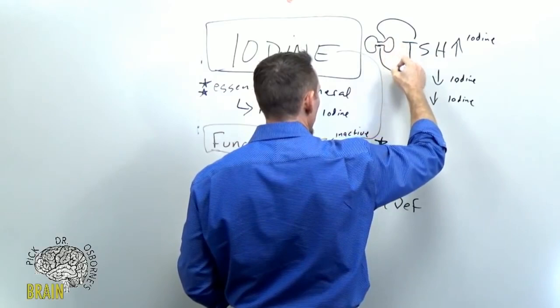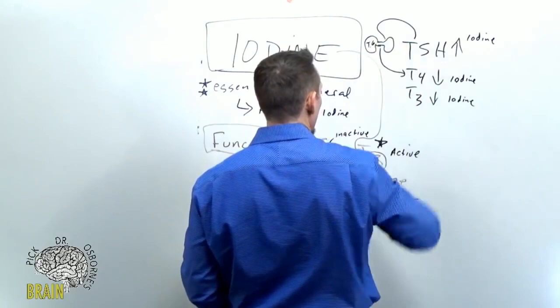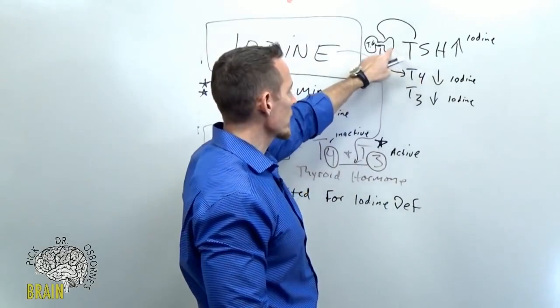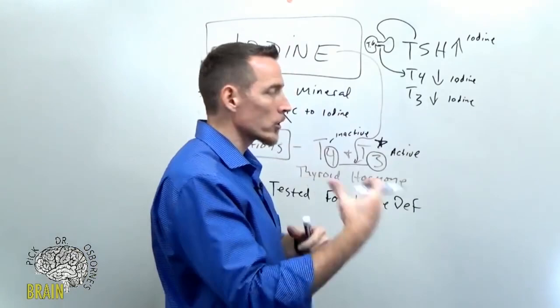So here's your thyroid gland here. TSH stimulates the thyroid gland to produce T4. And in doing that, what it actually does is it tells the thyroid gland to trap more iodine from the diet. So from the food that you're eating, the thyroid gland itself will start trapping iodine to produce that T3 and that T4.